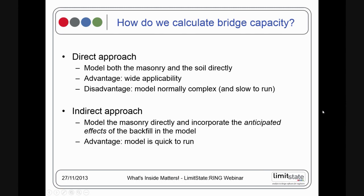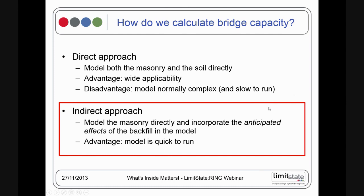The alternative is an indirect approach where you model the masonry directly and model the anticipated effects of the backfill. The big advantage is that the model is typically very, very quick to run. That's the approach adopted in LimitState Ring, meaning we can do dozens of analyses in seconds — important when traversing a load across the bridge to find the critical load position.